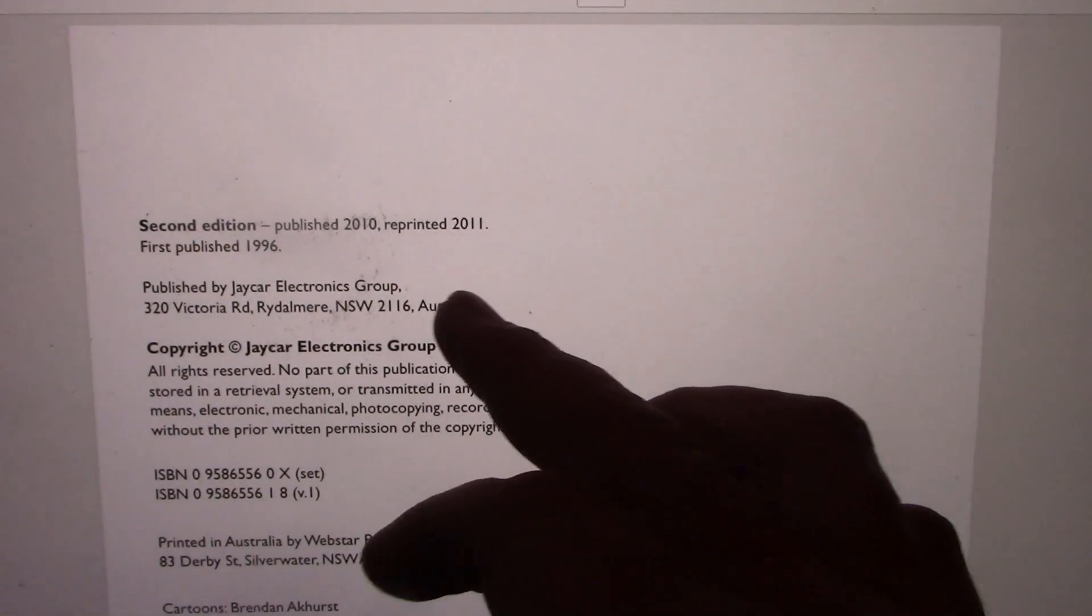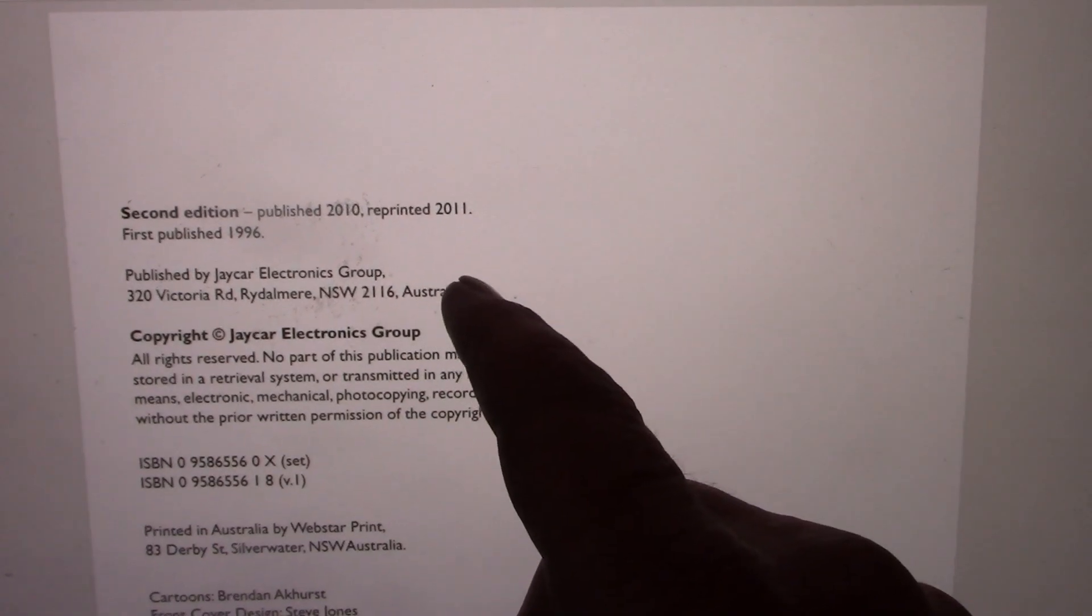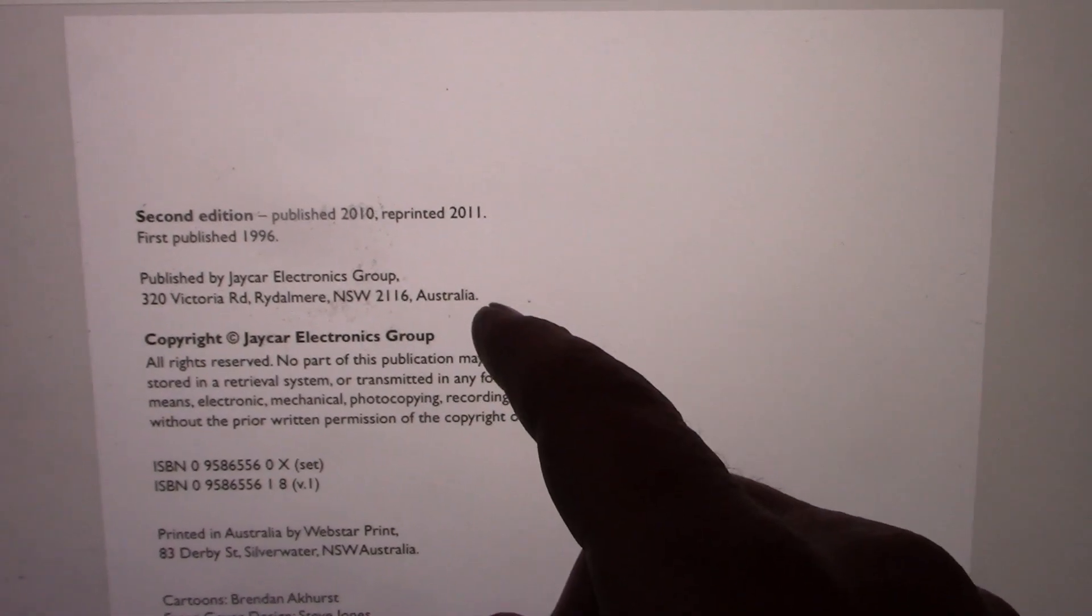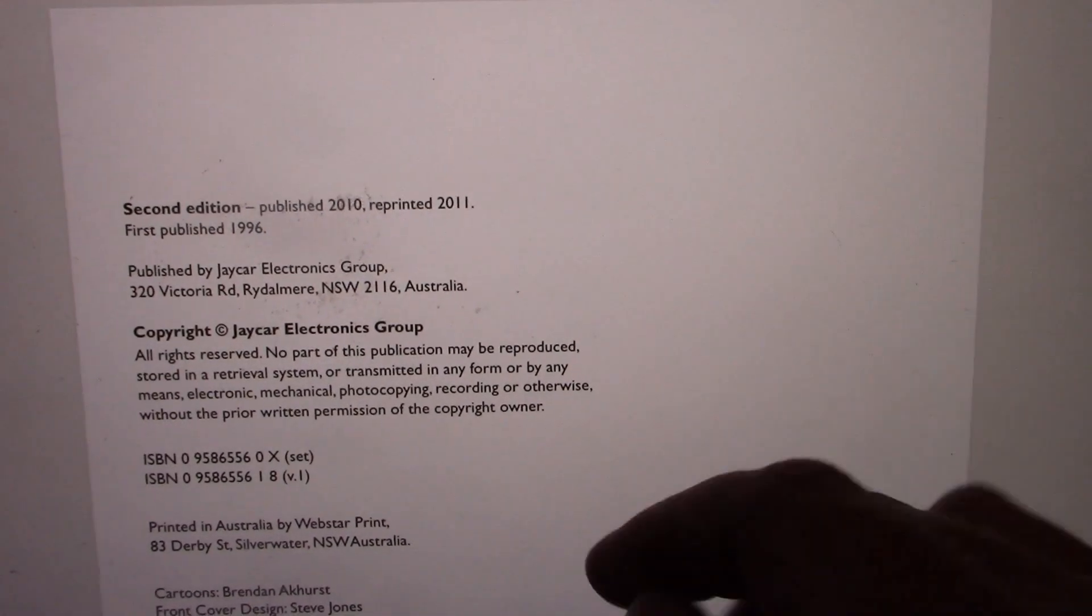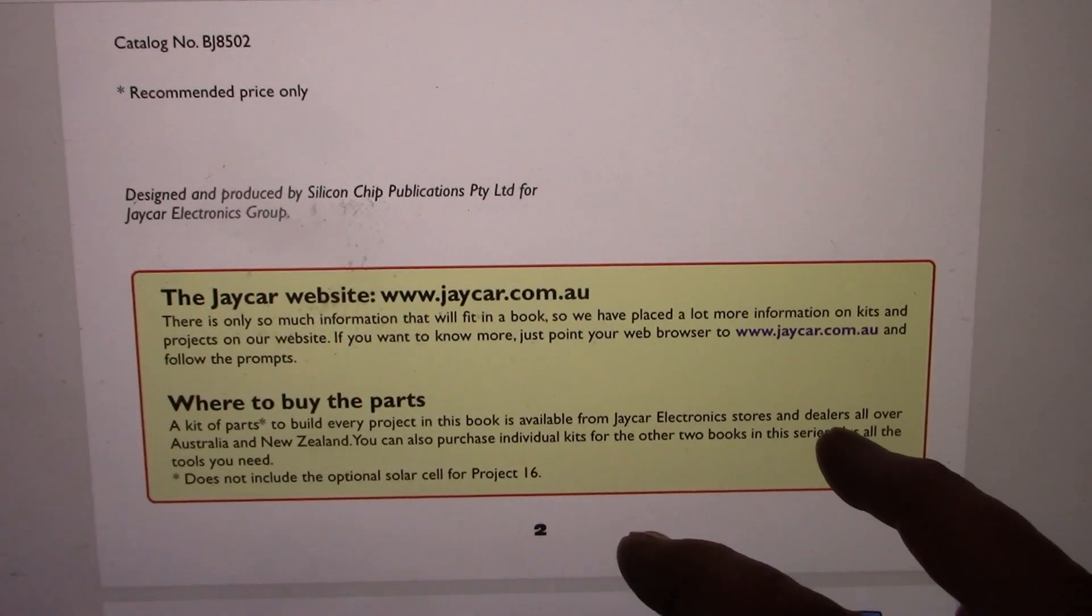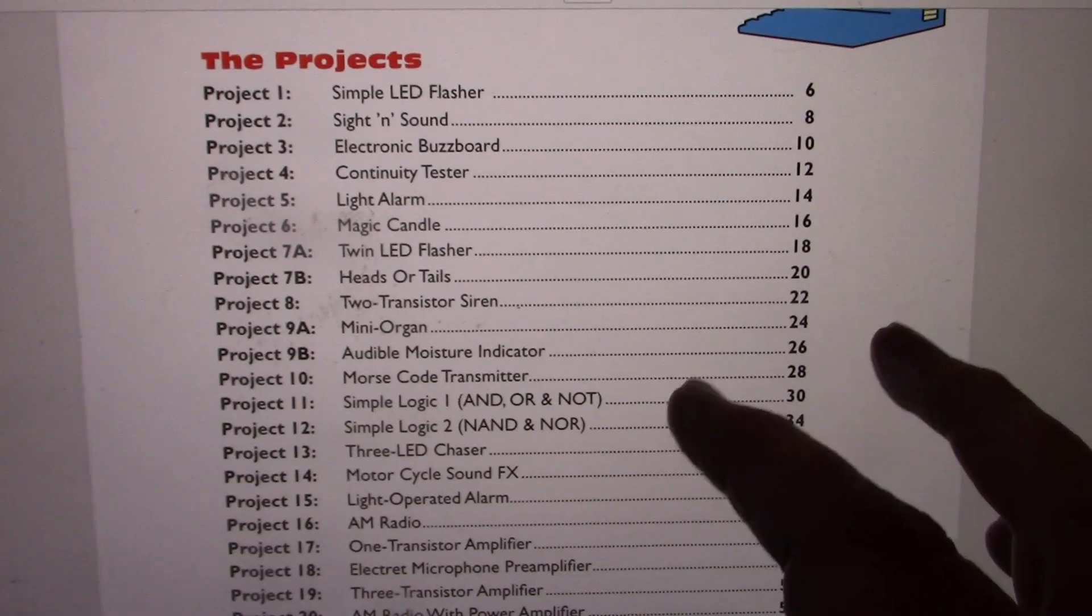And it was first published in 1996. So this was when Dick Smith was still going. So it was basically J-Car's rival product to the Dick Smith Funway series. But very clearly inspired by it.